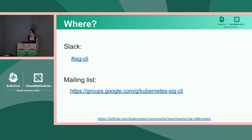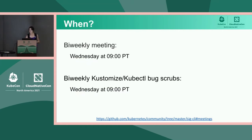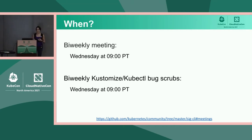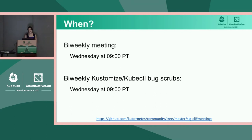You can find us in the SIG CLI channel on the Kubernetes Slack, and you can also reach us on the mailing list, which is Kubernetes SIG CLI. Perhaps the best way to get involved is at one of our weekly meetings. Our meetings are every Wednesday at 9 a.m. Pacific time, alternating between a normal SIG meeting where anyone can bring items for discussion — just add your item to the Google Doc — and a bug scrub. The bug scrubs alternate between being focused on Kustomize and focused on kubectl.